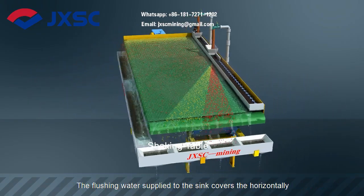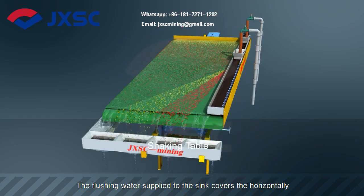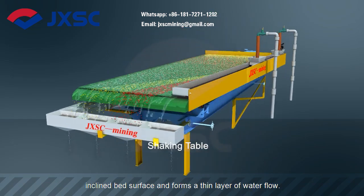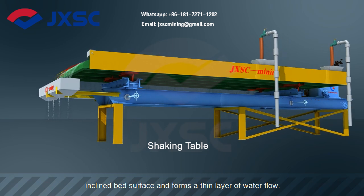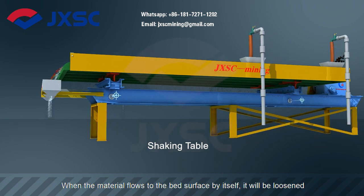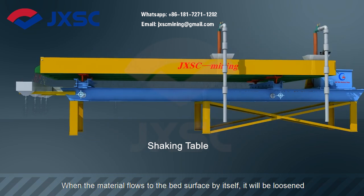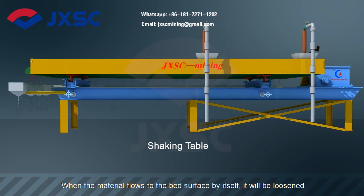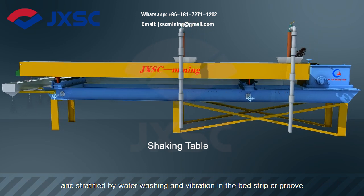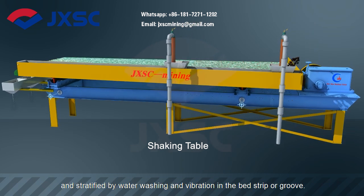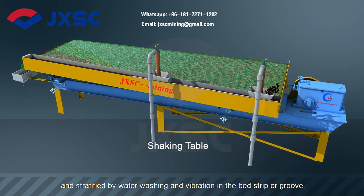The flushing water supplied to the sink covers the horizontally inclined bed surface and forms a thin layer of water flow. When the material flows to the bed surface by itself, it will be loosened and stratified by water washing and vibration in the bed strip or groove.